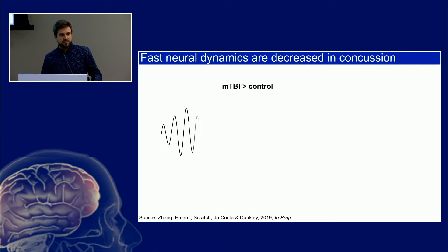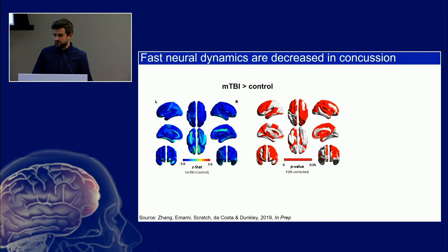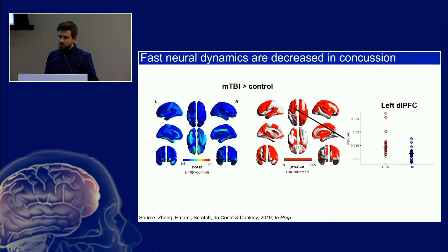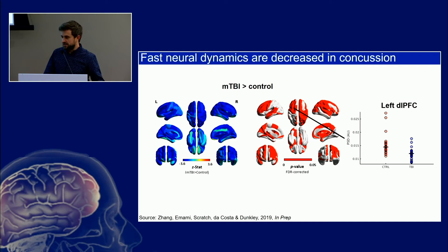The fantastic thing about MEG is that we record this rapid, fast neural activity — these dynamics. We can also look at the dynamics of brain activity, and once again at the beta rhythm at 20 hertz, we find that's also reduced across the brain quite substantially. The complexity of these signals is also reduced. But similar to the power measurements, there's a huge degree of overlap. We see significant effects using statistics, but this isn't really going to be able to diagnose a concussion on a case-by-case basis.